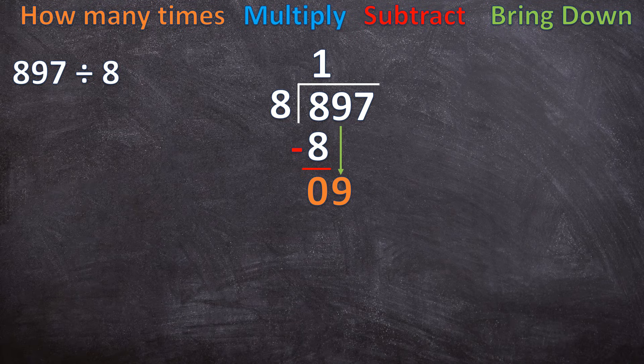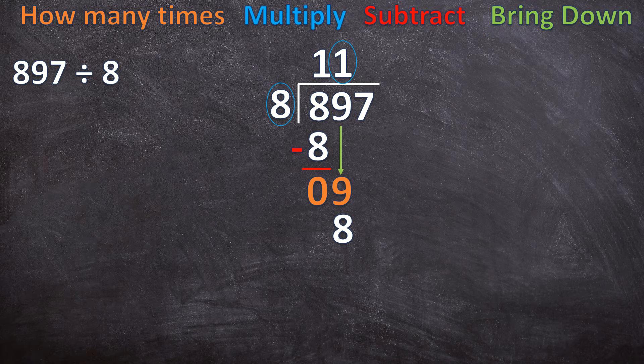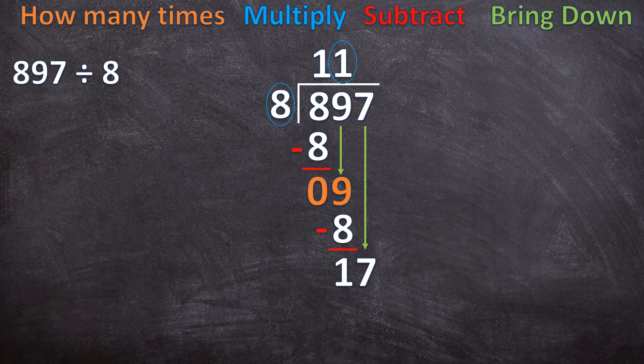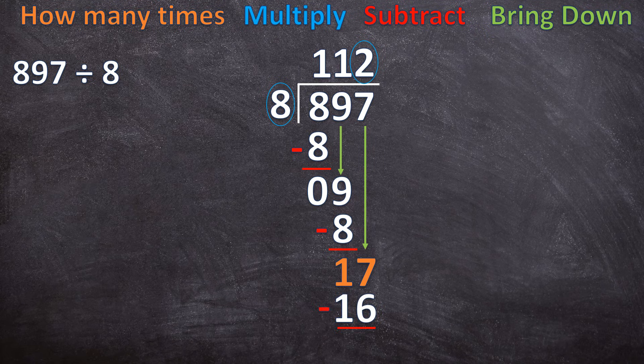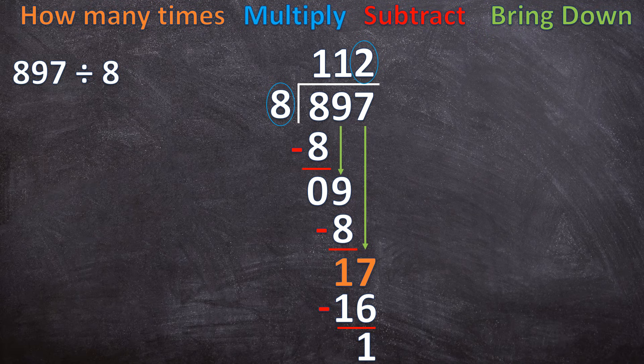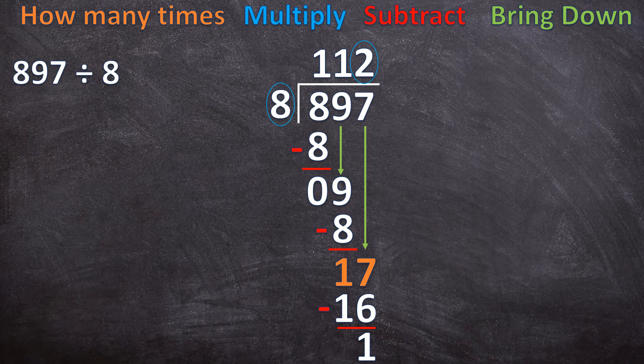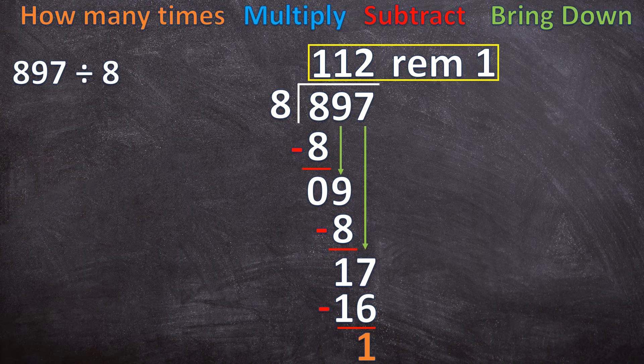Now we subtract, nine minus eight is one. We still have a seven to bring down. Now we start all over again. How many times can eight go into 17? Two times. And two times eight is 16, and 17 minus 16 is one. So now we see we don't have anything else to bring down, so this is where our long division is ending. So eight hundred and ninety seven divided by eight is one hundred and twelve with a remainder of one. So the answer we are writing is one hundred and twelve with a remainder of one.